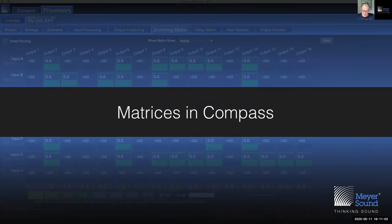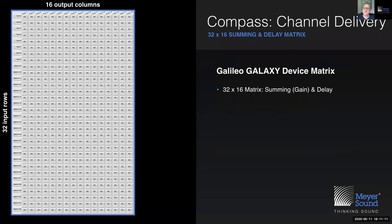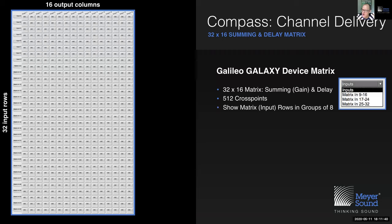How do matrices work in Compass? Here on the left side you see that one big matrix. It consists of rows top to bottom and columns left to right — specifically 32 input rows and 16 output columns, meaning we can set 512 cross points in theory. However, in the Compass software you will only see eight input rows at a time, so the full matrix is accessed via a dropdown menu showing groups of eight input rows. The first group of eight rows are the physical inputs on the back of the Galaxy device, which can be analog, AES, or AVB, whereas matrix inputs 9 through 32 are AVB only. The outputs 1 through 16 are all processed, but whether you have 16 physical outputs depends on the Galaxy model.